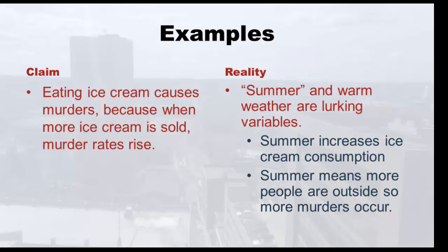Here's an example where you've got to be really careful with correlation. There's been a claim that eating ice cream causes murders, because when ice cream sales go up in an area, murder rates rise. Well, the reality is summer and warm weather are lurking variables — you sell more ice cream in the summer, so ice cream consumption goes up. But also, people are outside more and more murders occur. So it's not ice cream causing murders; summer is the common cause of both.